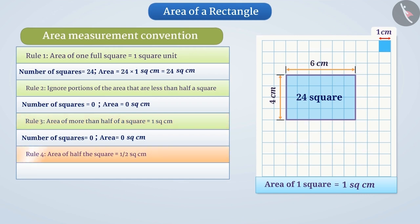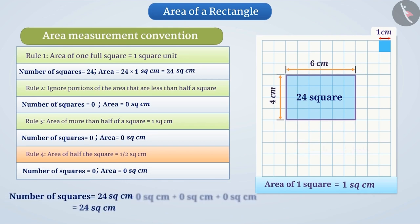Rule 4: If exactly half the square is counted, take its area as half square unit. We don't have half squares here. In this way, the total area of the rectangle is 24 cm².